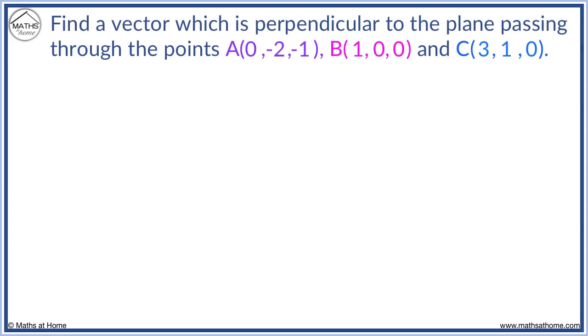Here is another example. We find AB as 1 minus 0 equals 1, 0 minus -2 equals 2, and 0 minus -1 equals 1.